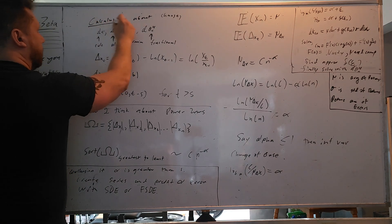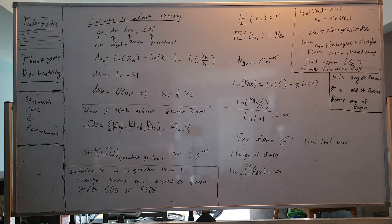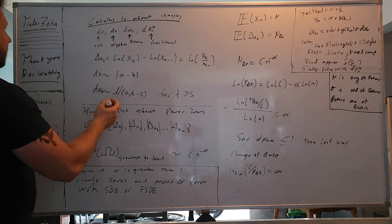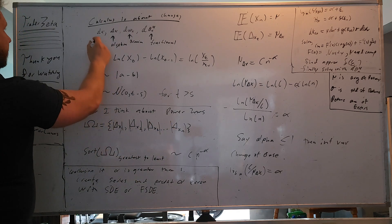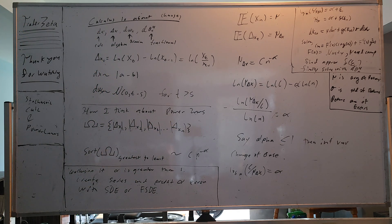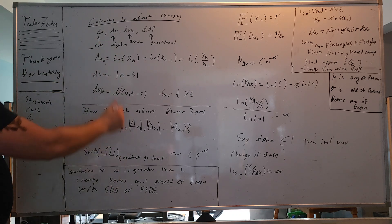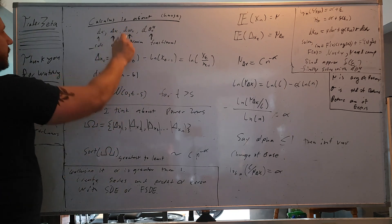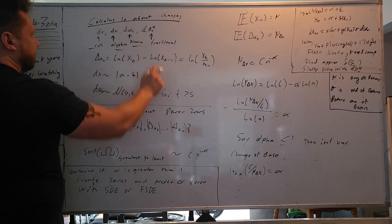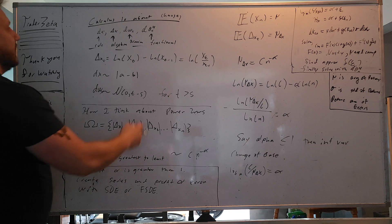Calculus is about change. How much does something change? In integrals and derivatives you see dx. This is kind of like a measure. In calculus the delta x is an algebra, the D with respect to the Wiener process is Brownian motion, and we have D with respect to fractional Brownian motion.